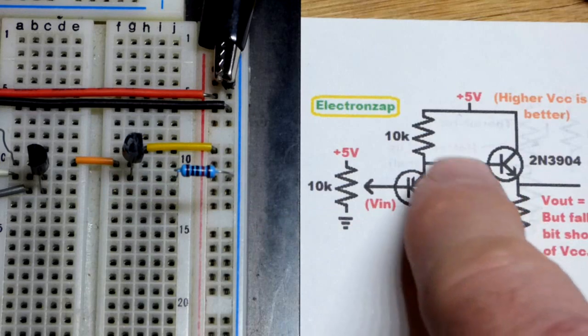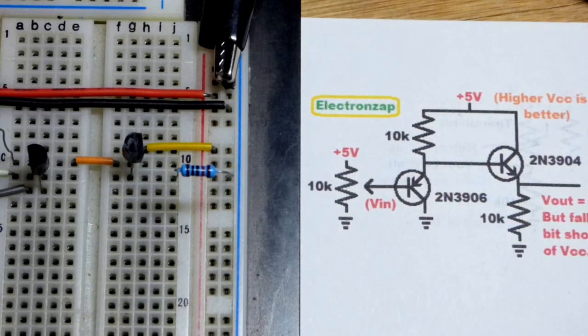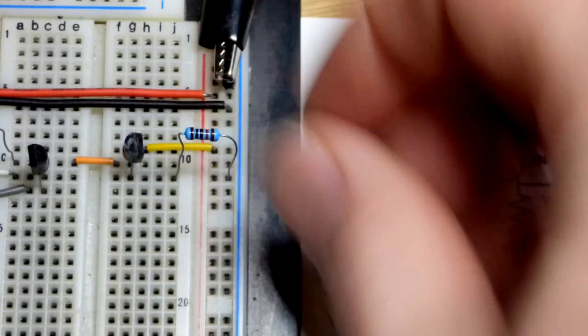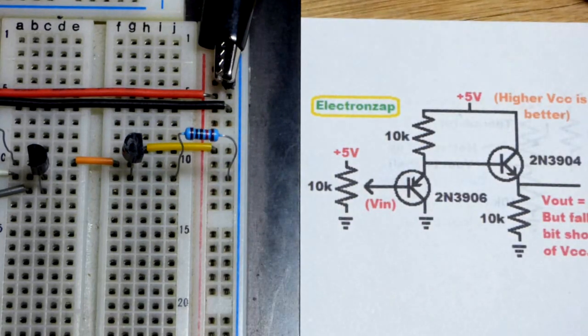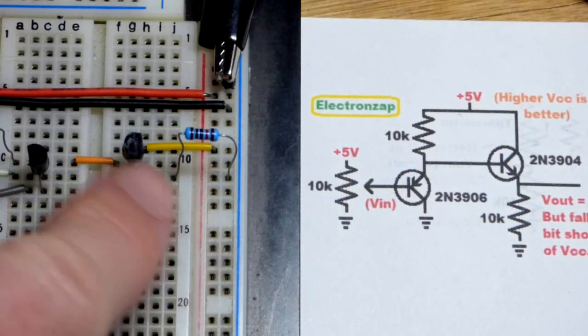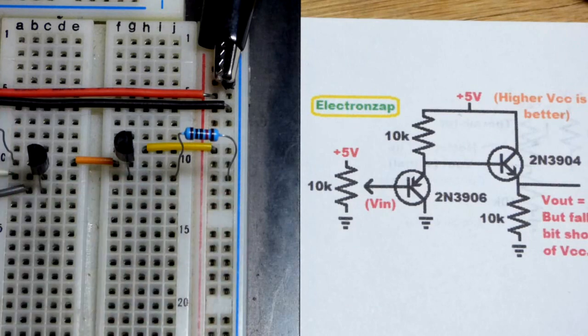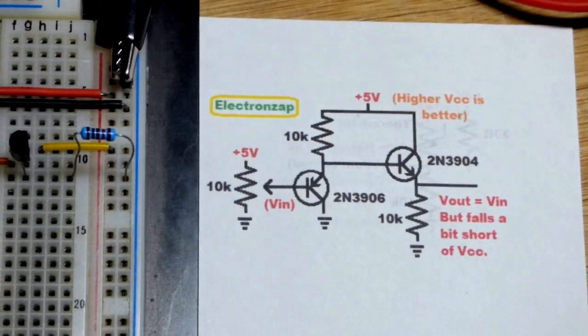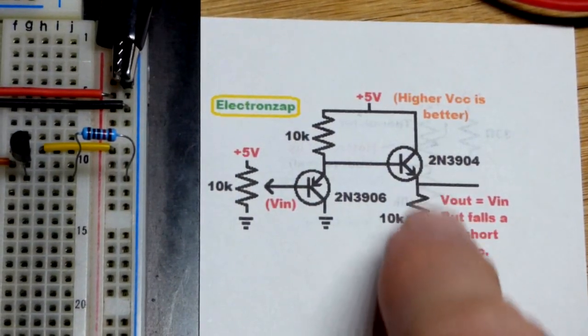So that's coming over to the base of the NPN bipolar junction transistor. You can see we got the 10,000 ohm resistor there. You may not need that to use that output voltage, but it helps give you a relationship to ground.